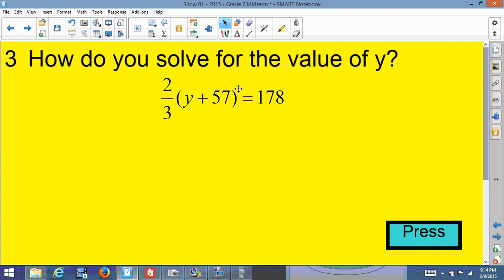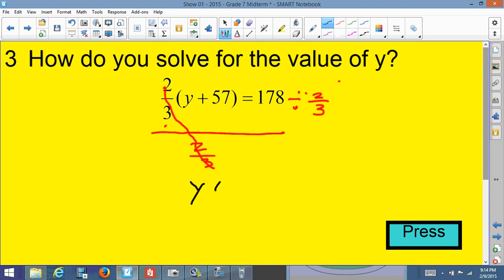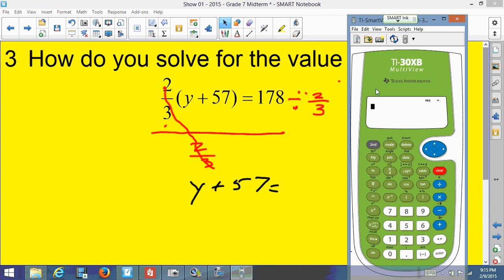How do you solve for the value of y? We have 2/3 times (y + 57) equals 178. Well, when you have a number next to a parenthesis, that means multiply. So I'm going to do the opposite of multiply, which is divide by 2/3. I'm going to divide both sides by 2/3, so my 2/3 will cancel out, leaving me with y + 57.